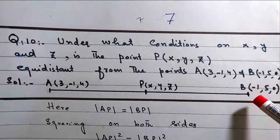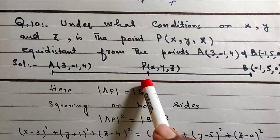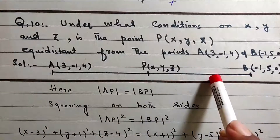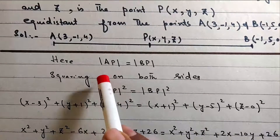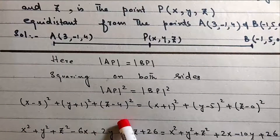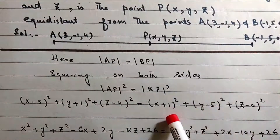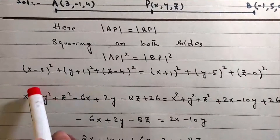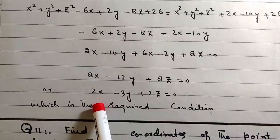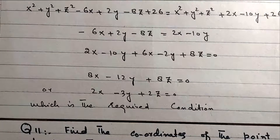This point P is equidistant from points A and B. We have A and P. Distance from A to P equals distance from B to P. Squaring on both sides, we derive the required condition.